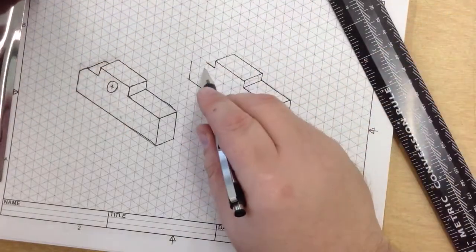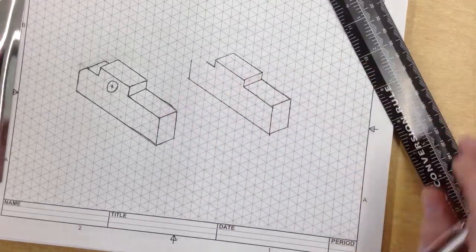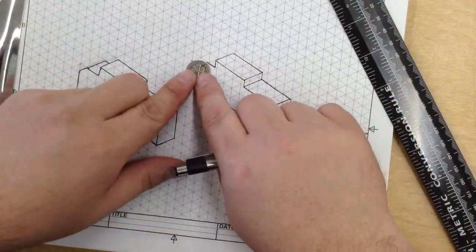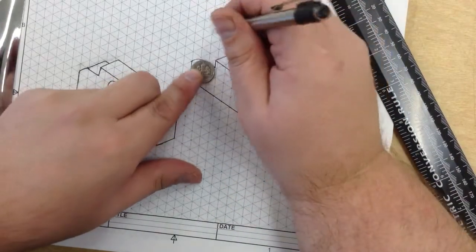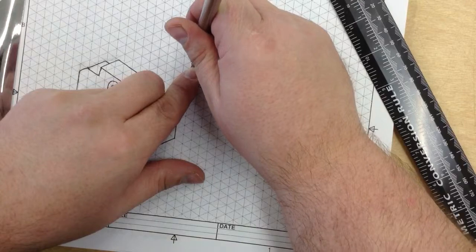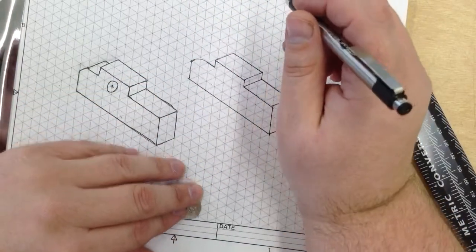And now I have a curve to draw. In order to draw this curve, I often like to use something that I know is round already. So for me, that is going to be this dime. That gives me my curve.